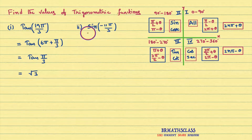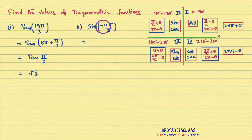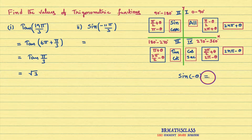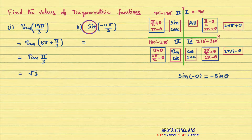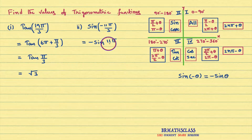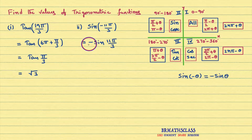Now we will see how to find this next value. Observe this problem — it looks like sin of minus θ. In trigonometry, we learn this formula: sin of minus θ. What is the formula for sin of minus θ? Sin of minus θ is minus sin θ. So sin of minus 11π by 3 is minus sin 11π by 3. That's why I have written it like this.